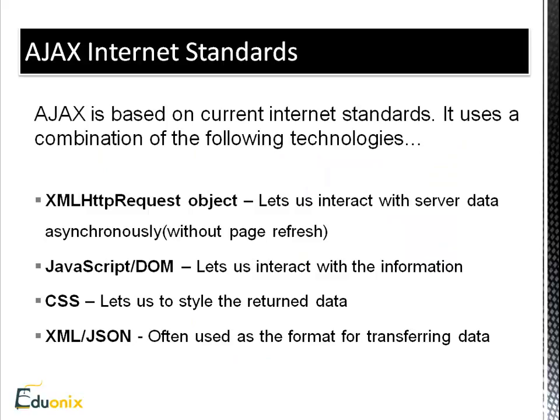AJAX consists of a bunch of Internet standards and technologies. The first is the XMLHttpRequest object, which lets us interact with the server asynchronously. Then JavaScript and the DOM — the Document Object Model — lets us interact with the data and information on the page. CSS is used to style the data, and we can use either XML or JSON for the format of transferring the data. We can also use plain text as well, which we'll look at.